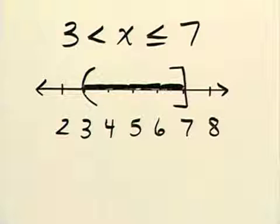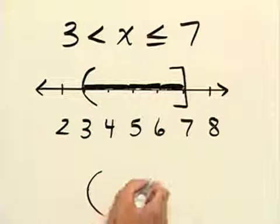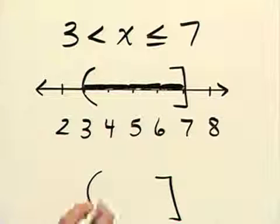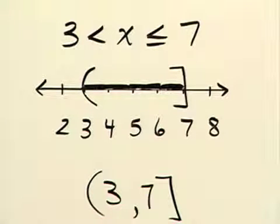Now for interval notation we do the same symbols, we use parentheses and a bracket, put our endpoints in there which are 3 and 7 and put a comma to separate that.